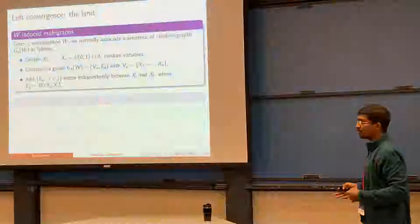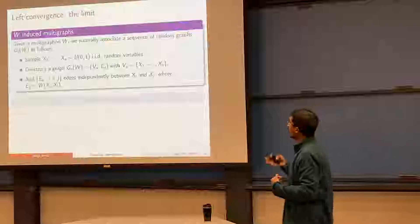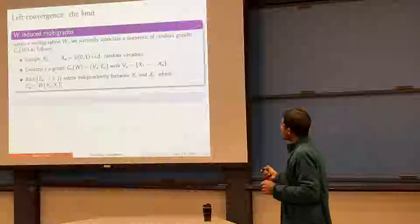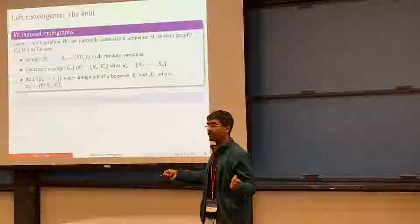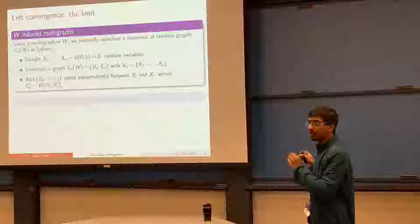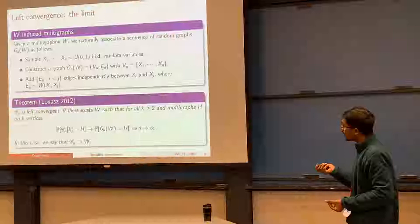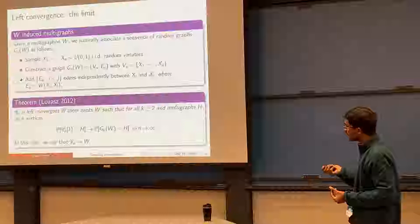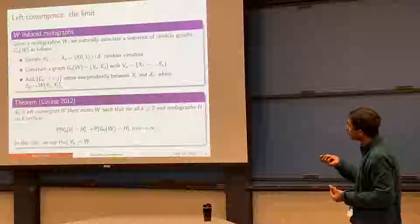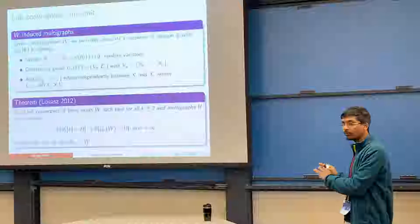A slightly more formal idea is to think of the corresponding w-random graph. If I give you a graphon w, first sample n iid uniform random variables on the interval, then construct a graph with n vertices where edges are added independently with probability w(xi, xj). One result of Lovász says that if your graph is left convergent, then there is a graphon w such that the corresponding limiting distribution for every k is encoded by the w-random graph with k vertices. This is precisely the sense in which the graphon is the limit for the graph sequence.